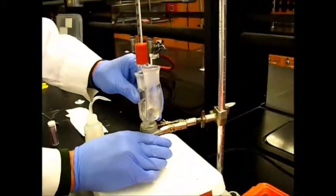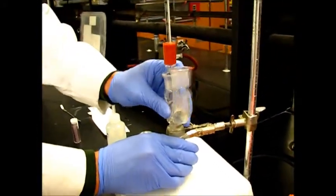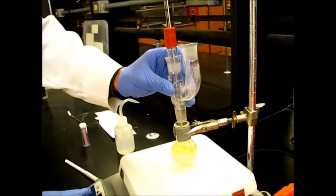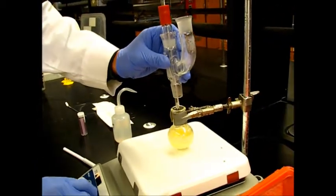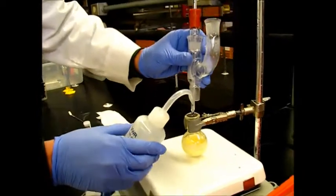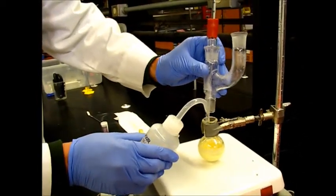We're going to start by removing the Claisen adapter. We're going to turn off the stirring as well and rinse off the thermometer.